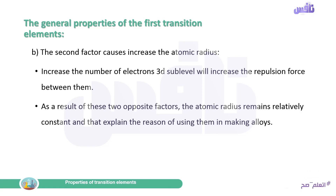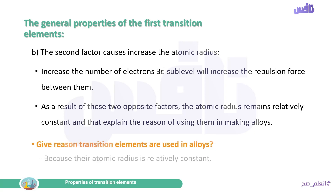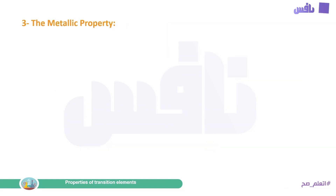As a result of these two opposite factors — the attraction force decreasing the atomic radius and the repulsion force between electrons increasing it — the atomic radius remains relatively constant. This gives the reason why transition elements are used in alloys: because their atomic radius is relatively constant.